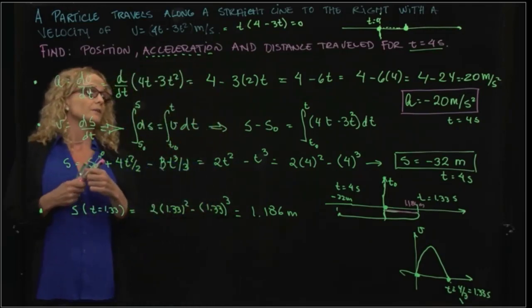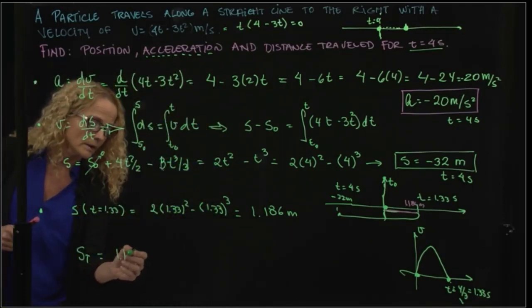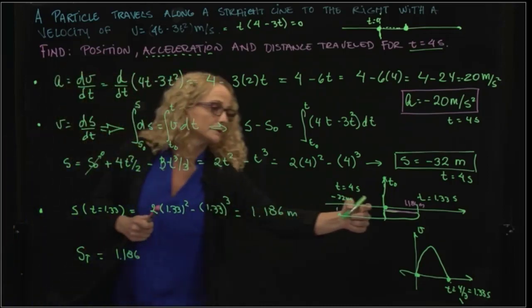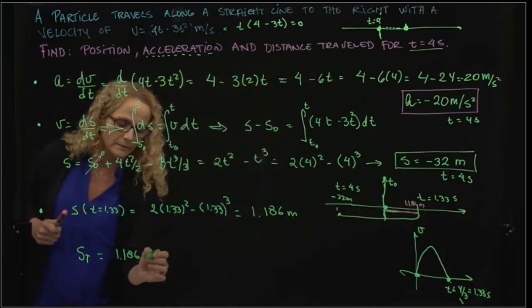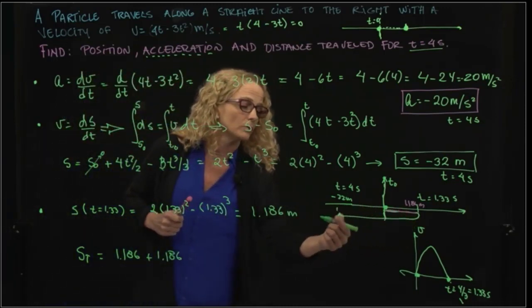So if we want to calculate the total distance traveled, it will have to be 1.186 meters in that direction, I came back 1.186 meters, and then I traveled 32 more.